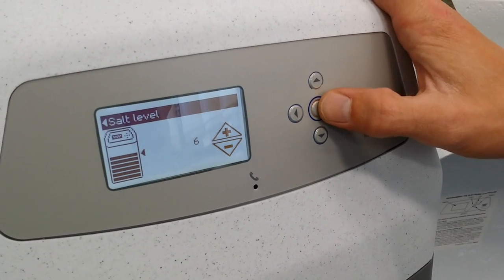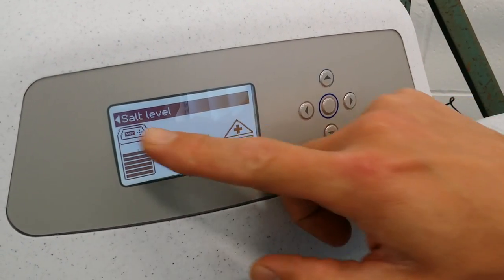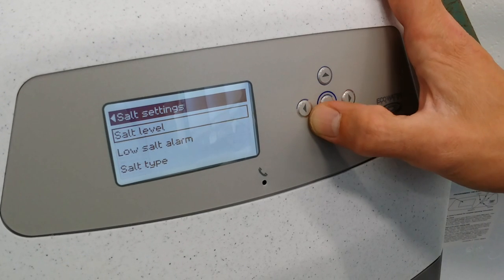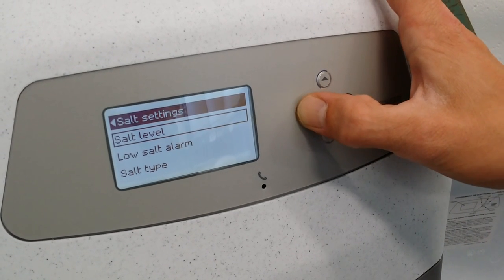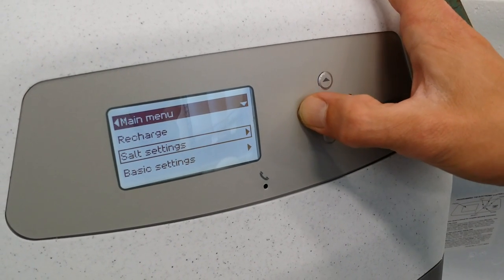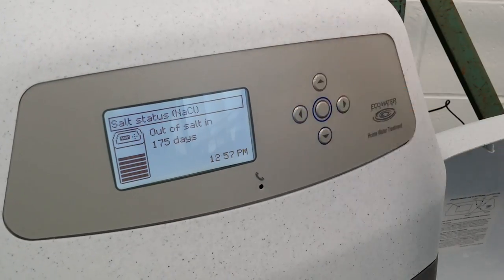You need to do this to the unit each time that you add salt. When you're done, just do the left arrow. It'll bring you back to the previous screen. Left arrow again to the previous screen, and then left arrow, and you're back to your home screen.